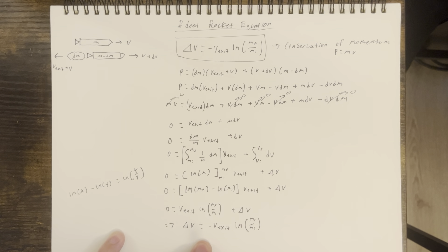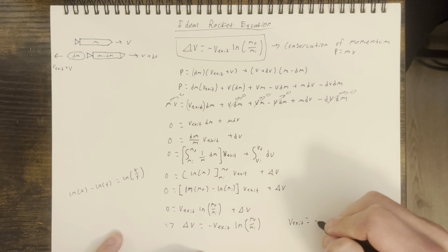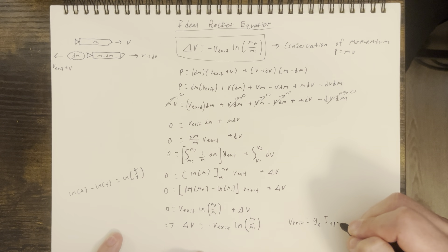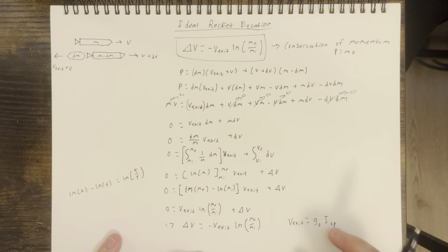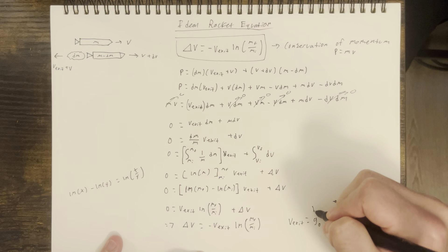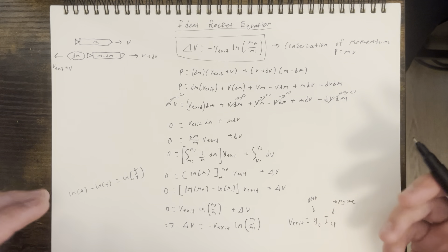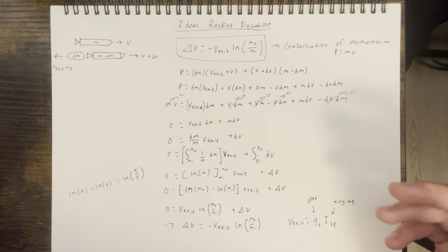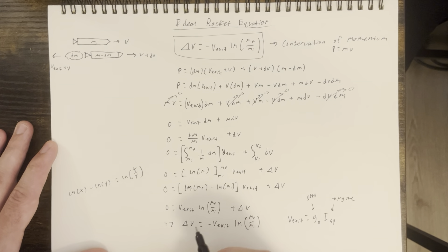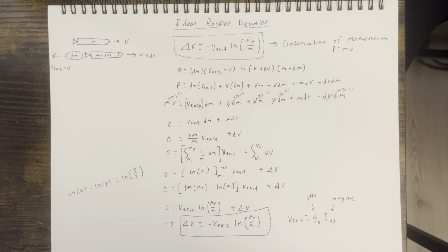Let's take a quick look at the exit velocity. This is defined as our gravitational constant times our specific impulse — I'll cover that in a later video. Basically, specific impulse is an engine characteristic that allows us to compare engines. The gravity term would change if you were on a different planet, but for Earth launch vehicles we use the standard value. Hope this helped you understand the ideal rocket equation — we'll cover more in other videos. Thank you!